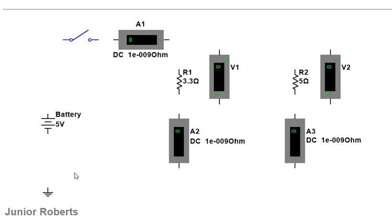A parallel circuit is basically a circuit in which the components are connected across each other — parallel to each other. Whenever we have a parallel circuit, it sets up a situation in which there are two or more paths in which current can flow. In this case we have two resistors in parallel, so we're going to have two paths that current can flow. We'll look at what happens to current and to the potential difference across devices in a parallel circuit.